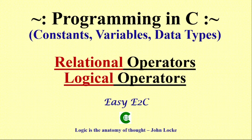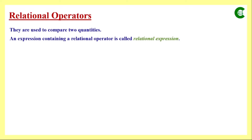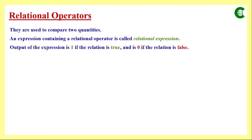In today's class, we will quickly have the idea of relational and logical operators that C supports. Relational operators are used to compare two quantities in our program. They will be used in an expression — called a relational expression — and on both sides of the relational operator we will have constants, variables, or both, which may be called operands or relational operands. When a relational expression is evaluated, the output is either 1 if the relation is true or 0 if the relation is false.